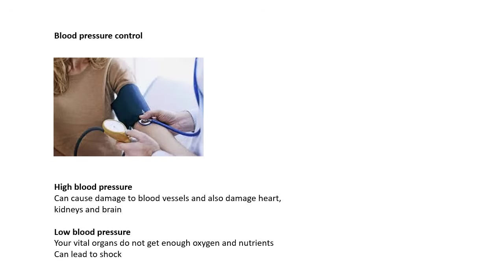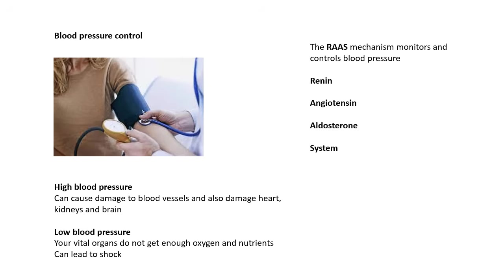Blood pressure control. It's very important that your blood pressure isn't too high or too low. If your blood pressure is too high, this can cause damage to blood vessels, the heart, kidneys and brain — there's also a bigger risk of a heart attack. Low blood pressure is also not good: if your vital organs don't get enough oxygen and nutrients, they can stop working properly, shut down, and it can lead to shock. Your blood pressure should be within certain limits to be healthy. What controls your blood pressure is the RAAS mechanism — the renin-angiotensin-aldosterone system — which monitors and controls blood pressure.